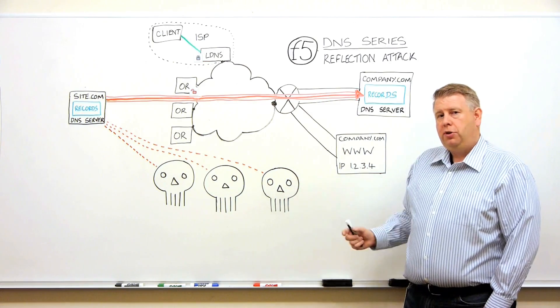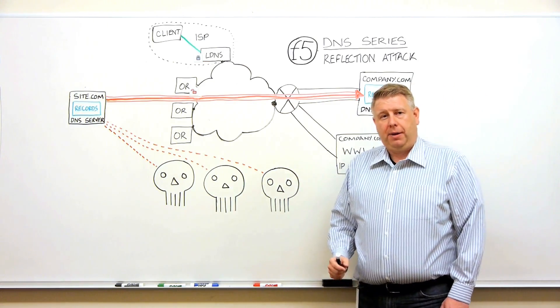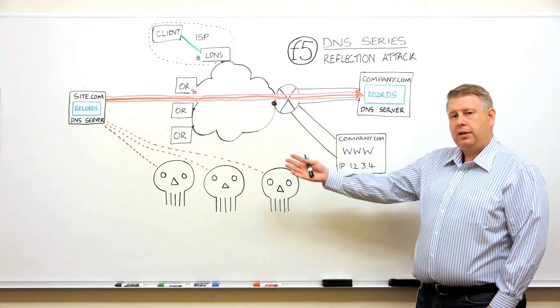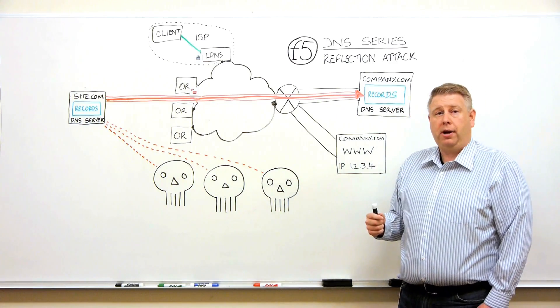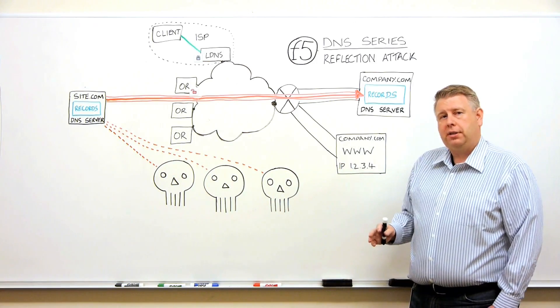What if you put a different return address on that package? Could you then trick somebody into sending the package to somewhere else? This is the idea of a reflection attack.